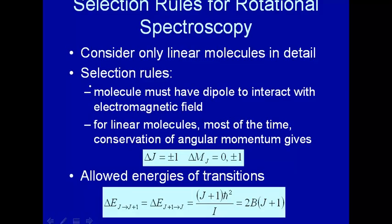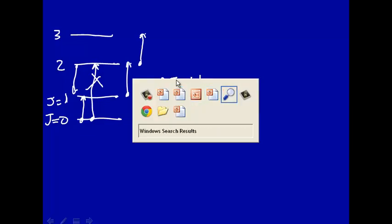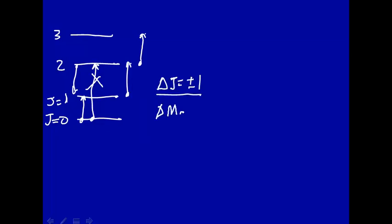So where do these selection rules come from? For ΔJ equal plus or minus 1, this comes from conservation of angular momentum. Before absorption of a photon, you have the angular momentum of the photon and the angular momentum of the molecule. After the photon has been absorbed, you have the resulting angular momentum. The angular momentum before and after must be equal, and from that you get the selection rule ΔJ = ±1 and ΔmJ = 0 or ±1.